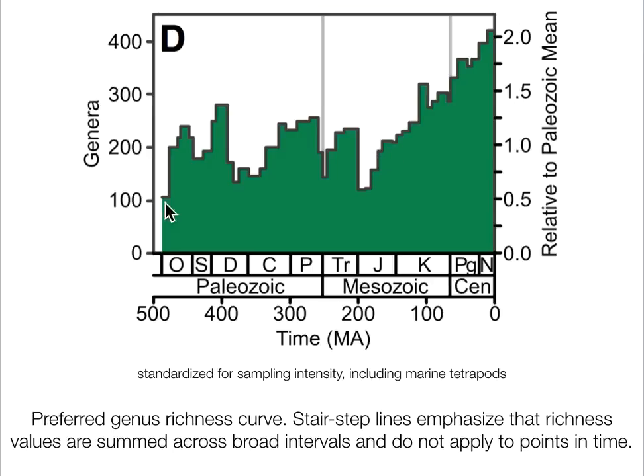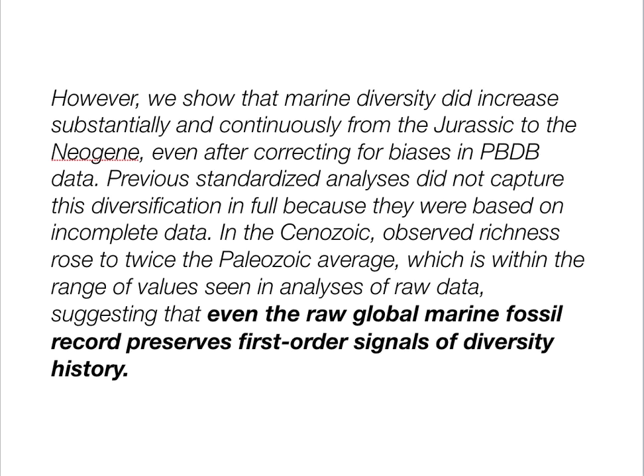This rise in diversity from the Mesozoic to the Cenozoic is still very real — one of the key conclusions from the paper. They show that marine diversity increased substantially and continuously from the Jurassic to the Neogene, even after correcting for biases. This wasn't captured in previous standardized analyses because they were based on incomplete data. Diversity within habitats rose to twice the Paleozoic average, within the range of values seen in analyses of raw data.